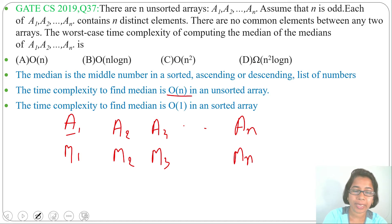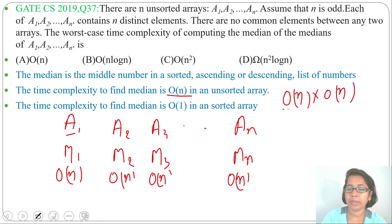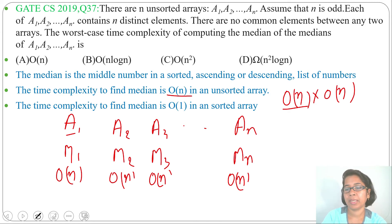For M1 the time complexity is O(n), for M2 it is O(n), and similarly for each array up to Mn it is O(n). Since we are computing medians for n arrays, we add O(n) a total of n times, giving us O(n) × O(n) = O(n²) for finding all the medians.